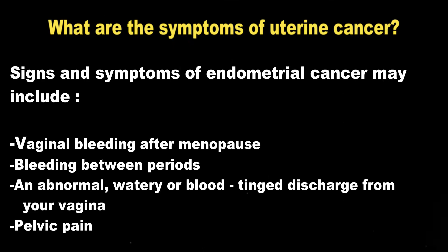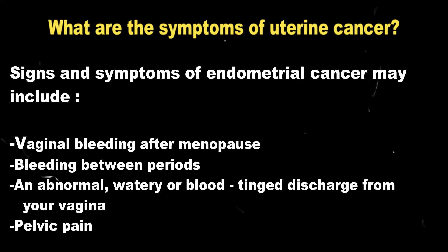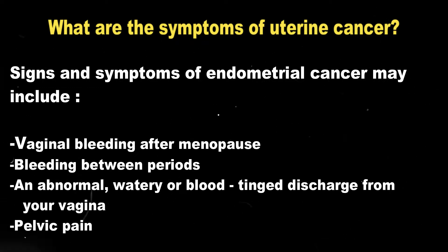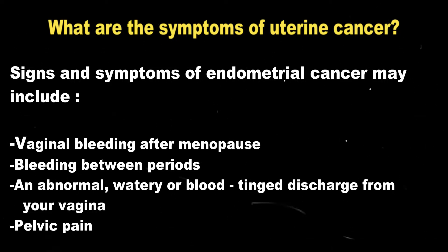Now, what are the symptoms of uterine cancer? First of all and most common is vaginal bleeding, mainly after menopause. And bleeding between periods — abnormal blood is discharged from your vagina.